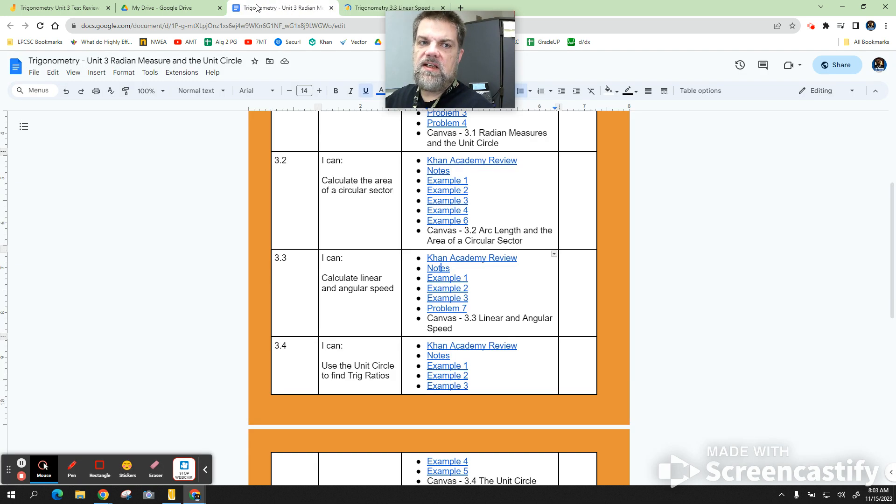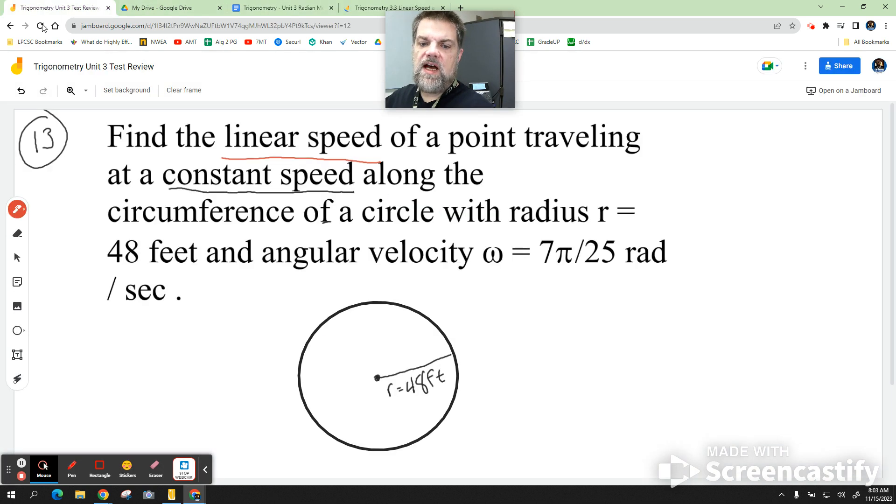And so, in this example, I am given a radius, right? And so, I'm just going to jot these things down. I'm given a radius, which is 48 feet. I'm given an angular speed, omega is equal to 7 pi over 25 radians per second.